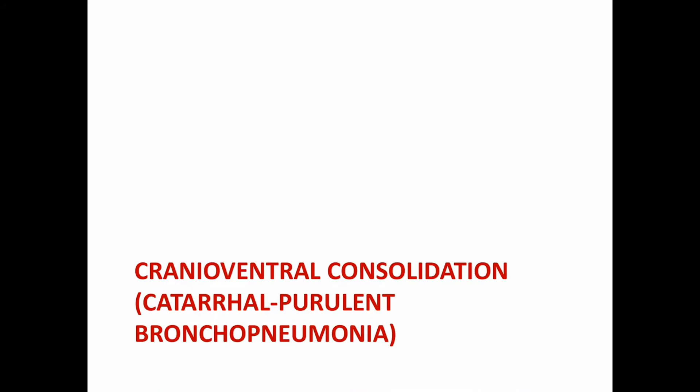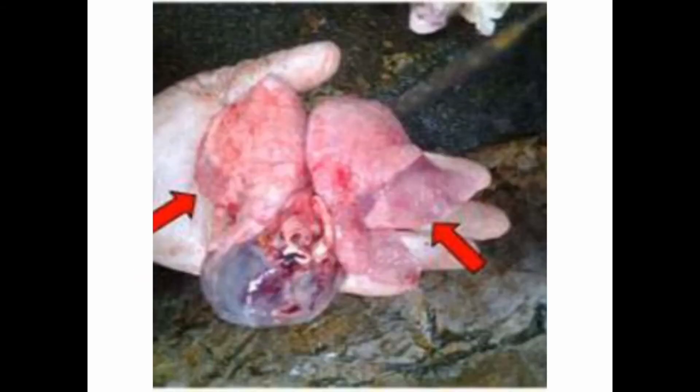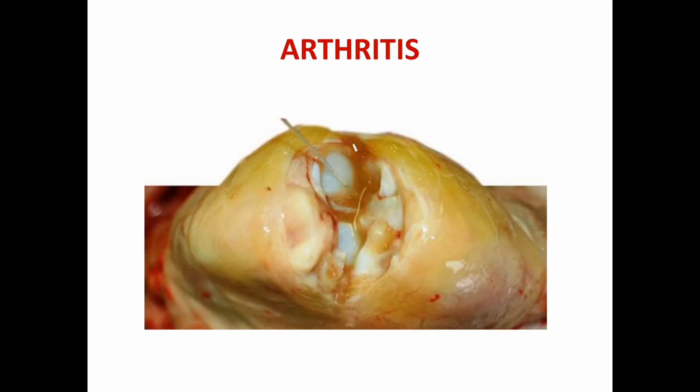Next is cranio-ventral consolidation of lungs, that is catarrhal purulent bronchopneumonia. In this picture, you can see the cranio-ventral consolidation of lungs — it is marked with an arrow.